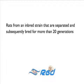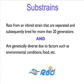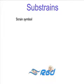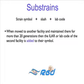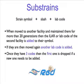If rats from an inbred strain are separated and subsequently bred for more than 20 generations and are genetically diverse due to factors such as environmental conditions, food, etc., then they are called substrains. These are named as the strain symbol, a slash, then the ILR or lab code of the group where they are maintained. When moved to another facility and maintained there for more than 20 generations, the ILR lab code of the second facility is added to their symbol. If they are then moved again, another ILR is added. Once they have three ILR codes, then the first one is dropped if a new ILR needs to be added.